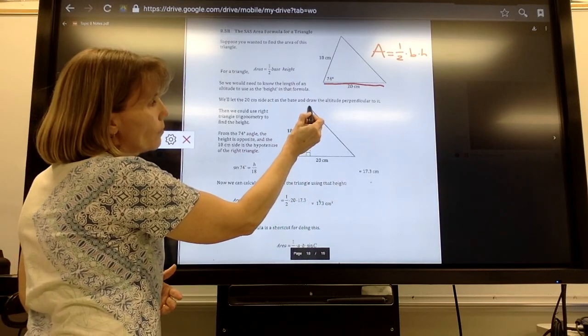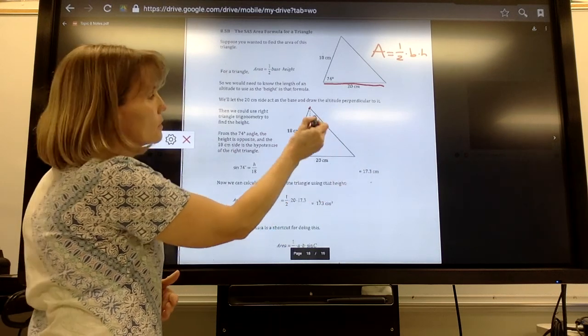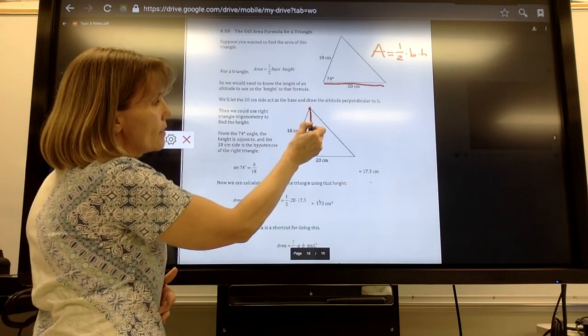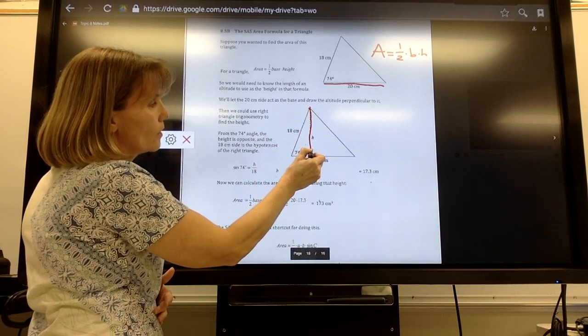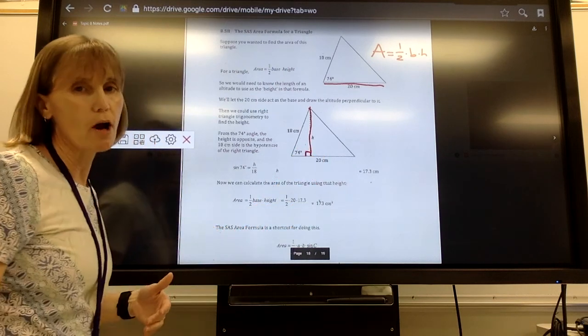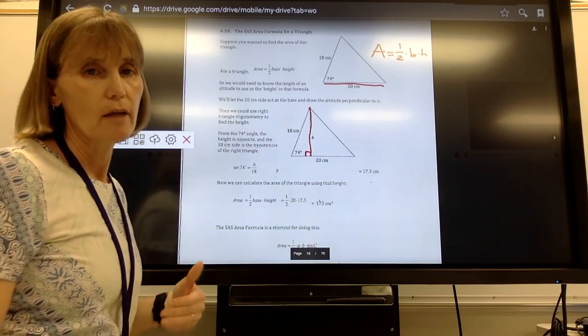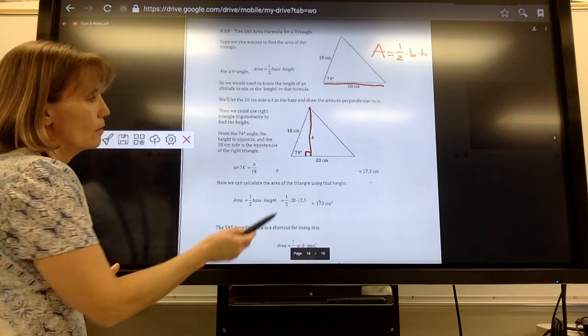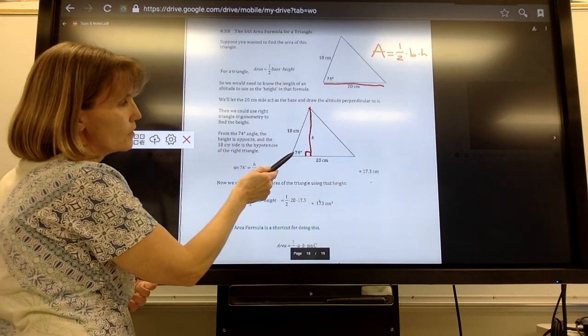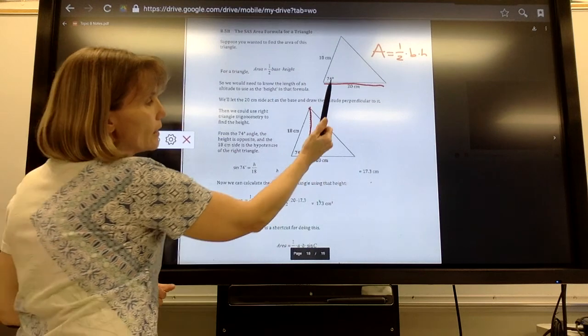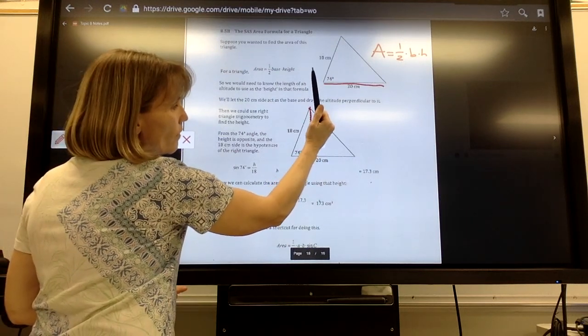We could drop an altitude. Remember, an altitude goes from a vertex to the opposite side of the triangle and creates this 90-degree angle. So we could drop an altitude in that triangle to find the height. Since I know this is 74 degrees, I could figure out what this height is using my trig values.